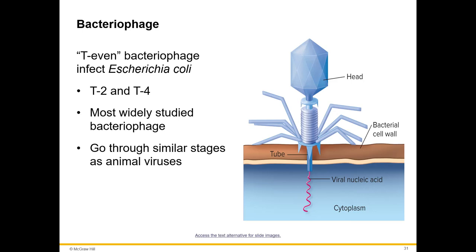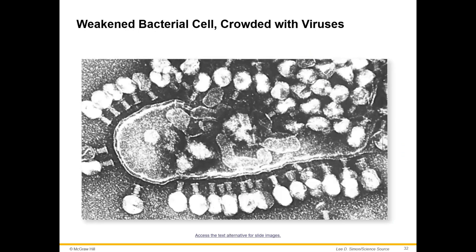There was discussion about whether bacteriophages could be used to kill bacteria on food surfaces — sprinkling phages onto food to kill harmful bacteria. However, concerns arose about potentially making bacteria more pathogenic, success rates, and other unknowns. The final image shows a weakened bacterial cell crowded with viruses — you can see the bacterial cell and the bacteriophages surrounding it.